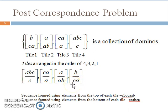For PCP we need to find a finite sequence arrangement of tiles such that the sequence formed by elements on the top must be the same as the sequence formed by elements at the bottom. To find this sequence, the tiles may be used as many times as we want and may be placed in any order — that is, tiles can be repeated and the arrangement can be in any order.